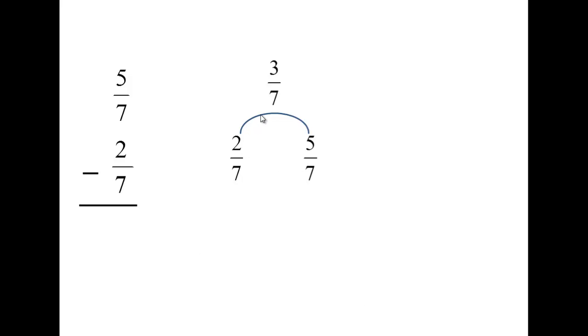Think about that. If you add 2 7ths and 3 7ths, you'll get to 5 7ths. So yeah, the answer is 3 7ths. Start off with an easy one. Let's get a little bit more tricky.